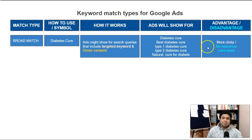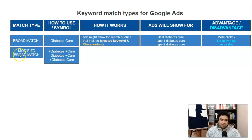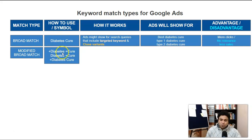Next we have modified broad match. From the name you can understand — it's a modified version of broad match. In simple terms, you're giving instructions by adding a plus symbol before each keyword. So before 'diabetes' we add a plus, and before 'cure' we also add a plus. You can also add plus to only one of the keywords — I'll show you what that means.